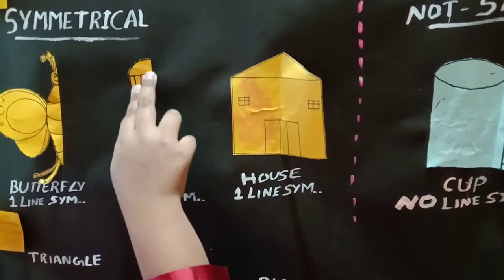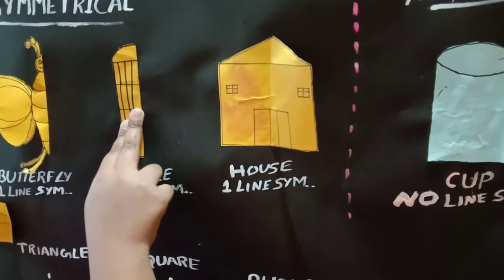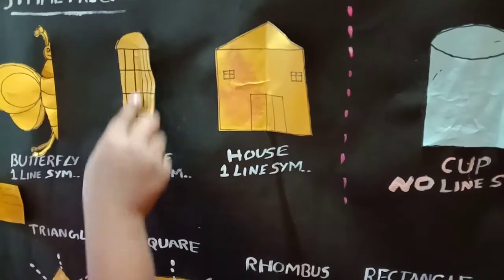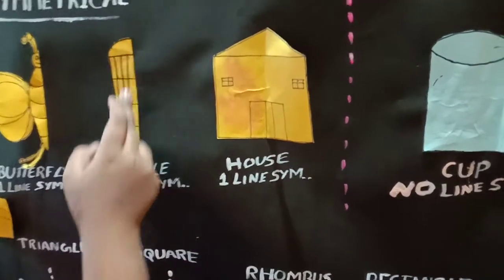Bottle, I fold the bottle and it is overlapping each other and it has one line of symmetry. So it is a symmetrical shape.